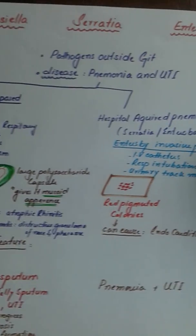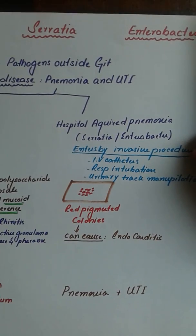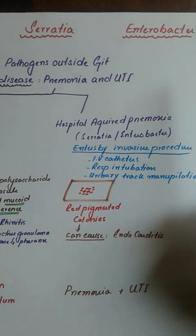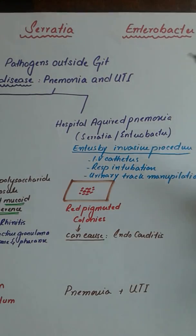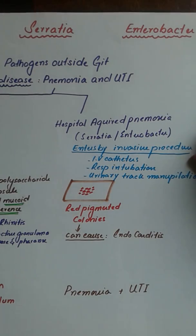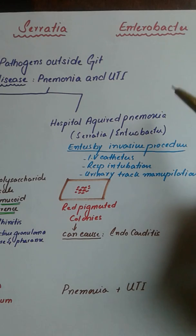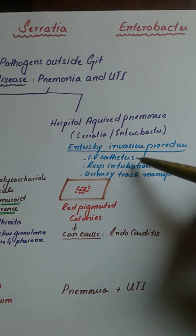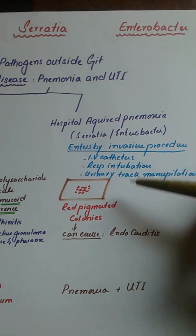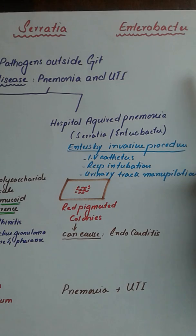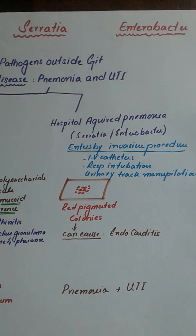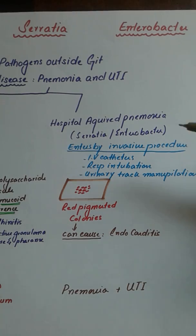Serratia and Enterobacter occur in patients who are already hospitalized, meaning they occur in a hospital environment. These organisms get into such patients via IV catheters, respiratory intubations from artificial ventilation, or urinary catheter manipulation done in bedridden patients.